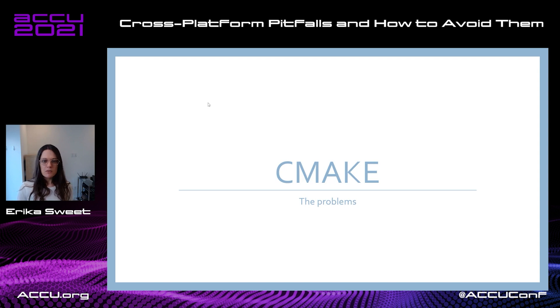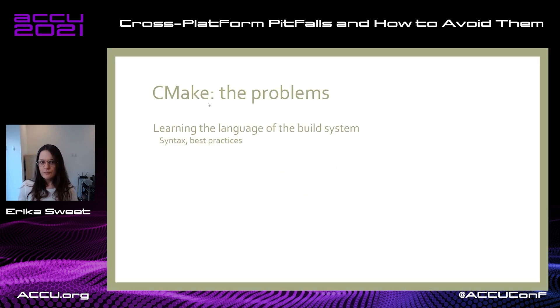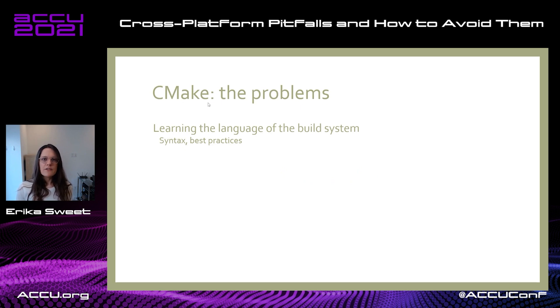This leads to something called the CMake network effect — the idea that other tools, projects, and libraries are more likely to be using CMake and integrate well with your own CMake projects. We've also seen more IDEs and editors adding their own CMake support in response to this effect. But even if you're using CMake, there's still a lot of ways your life can be difficult. One thing I hear repeatedly from cross-platform developers is that it can be difficult to learn the language of the build system.